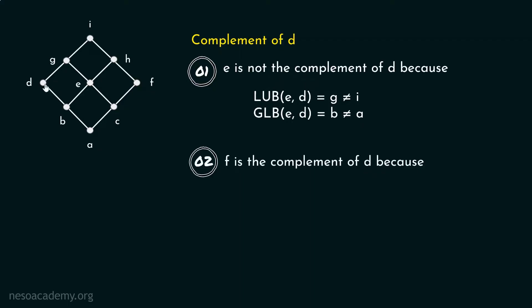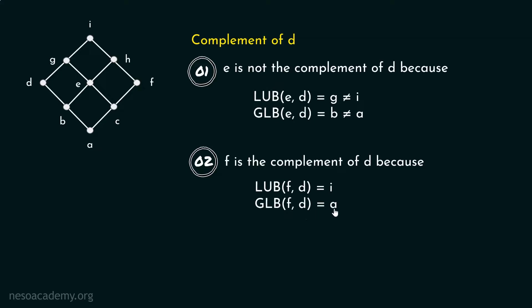F is the complement of D. The least upper bound of F and D is equal to I — you can verify this by tracing the path upward from these two points, and they meet at I. Also, the greatest lower bound of F and D is equal to A. So it is clear that F is the complement of D.